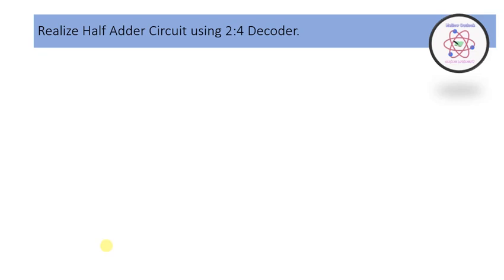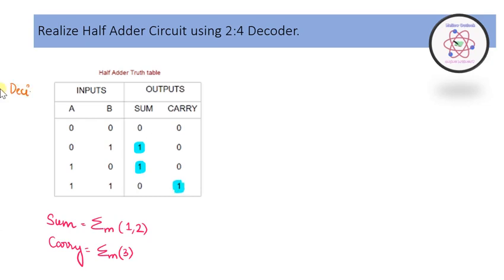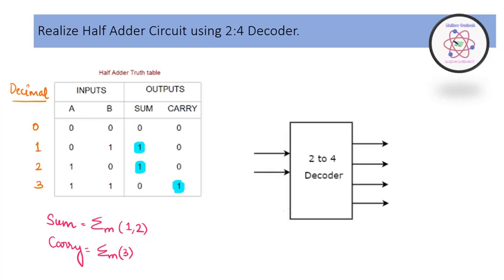Next, we realize the half adder, full adder, half subtractor, and full subtractor using decoders. For the half adder, we use a 2-to-4 decoder since it has two inputs. From the truth table, the sum output is high for decimal notations 1 and 2, and the carry output is high for decimal notation 3. I combine notations 1 and 2 for the sum using an OR gate, and decimal notation 3 directly gives the carry.